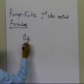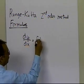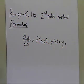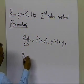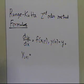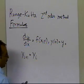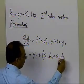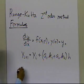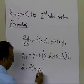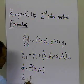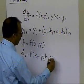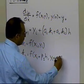Let me refresh the memory that we are trying to solve the differential equation which is a first order ordinary differential equation of this particular form. The general formula for the Runge-Kutta Second Order Method is given as: the value of y at a step ahead equals y at the current point, plus a1 times k1, plus a2 times k2 times h. Here k1 is the value of the function at the current point, and k2 is the value of the function at some point ahead, given by x_i plus p1 times h, y_i plus q11 times k1 times h.